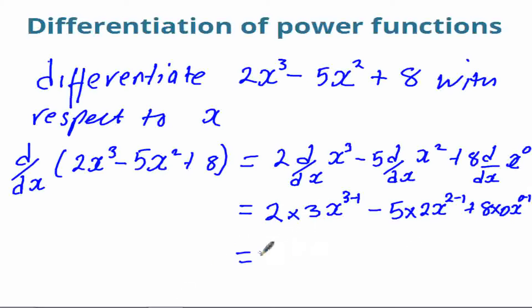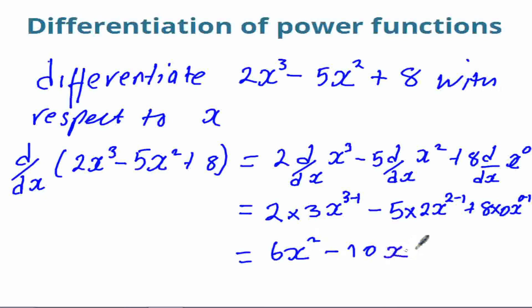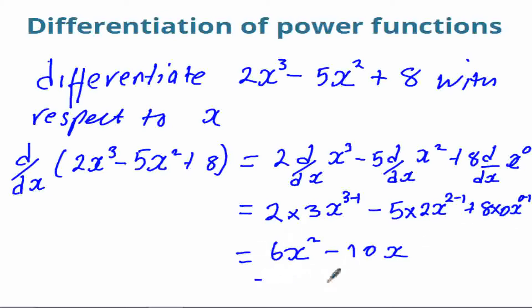So this becomes 6x² minus 10x to the power 1. Now since we have a 0 multiplying everything in the last term, that whole thing disappears. So our final answer is 6x² - 10x.